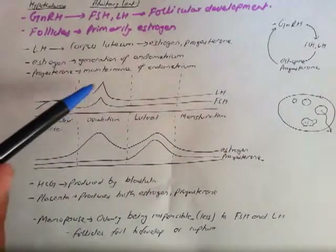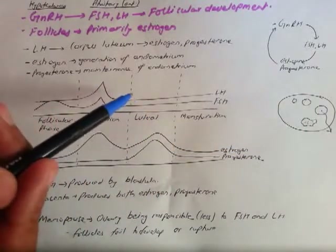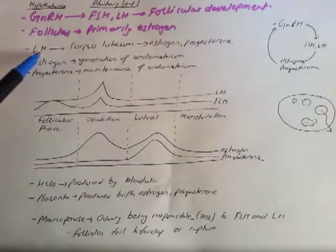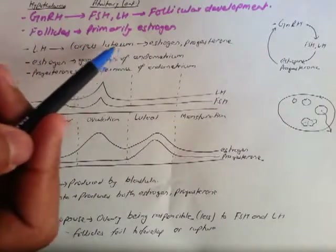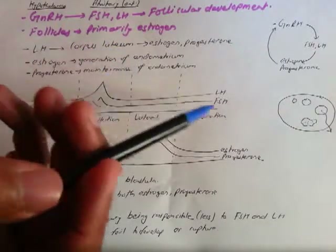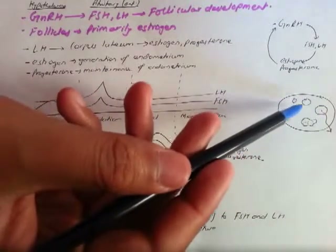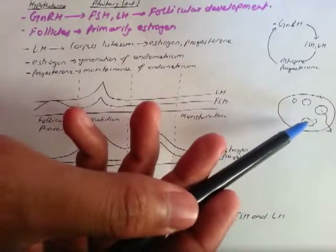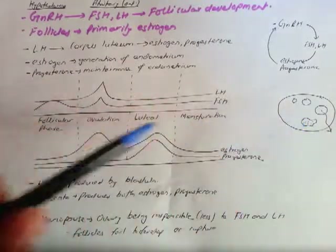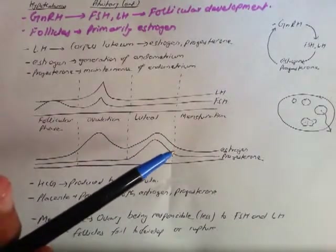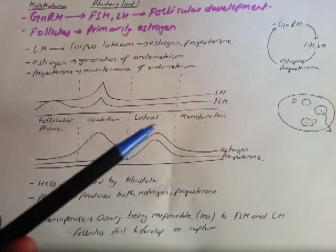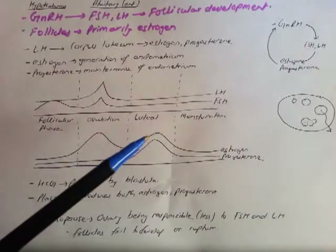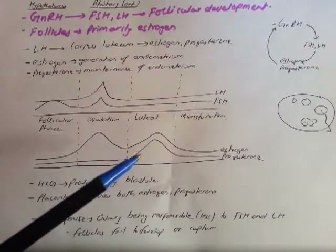In the luteal phase, LH is being produced and it maintains the corpus luteum. The follicles primarily produce estrogen, but the corpus luteum produces both estrogen and progesterone. So we can now see in the graph a rise in both estrogen and progesterone during this phase. You need to know that estrogen spikes twice during the cycle, but progesterone only spikes once.